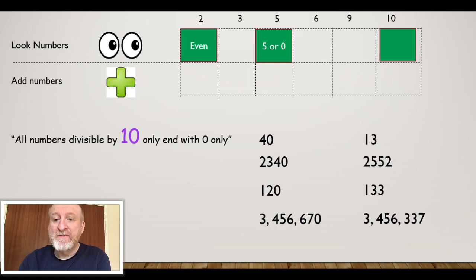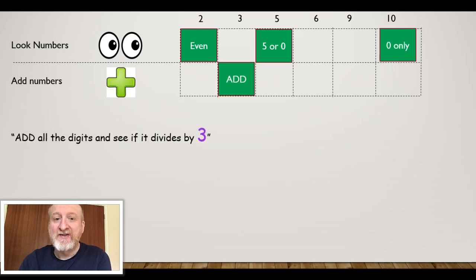The divisibility rule for 10, really easy: anything that ends in a 0. Again, you probably know this already. So all the numbers on the left column all end in 0, they're all divisible by the number 10. All numbers on the right don't end in 0, they're not divisible by 10.